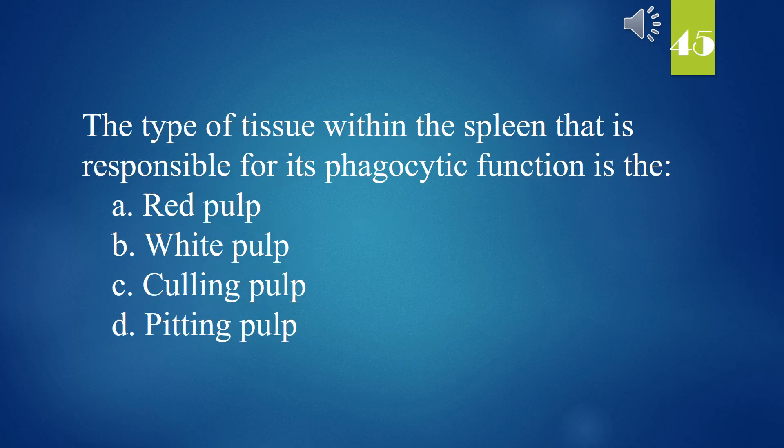The type of tissue within the spleen that is responsible for its phagocytic function is the: A. Red pulp. B. White pulp. C. Culling pulp. D. Pitting pulp. The answer is A. Red pulp.